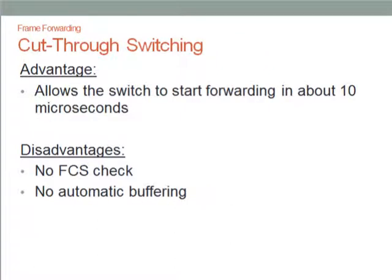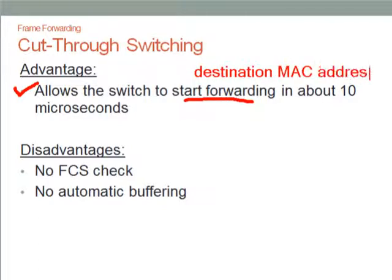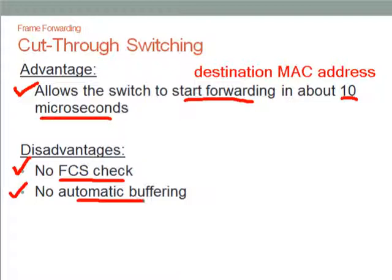For cut-through switching, it is the opposite of store and forward. It is advantageous because it starts forwarding the frame as soon as it receives the destination MAC address, which is typically done in about 10 microseconds. However, the disadvantage is that it does not perform any FCS checks and does not allow automatic buffering of frame information, so if information is sent too fast, it will be unable to buffer.